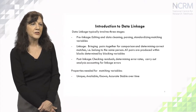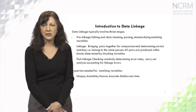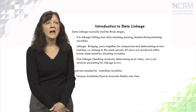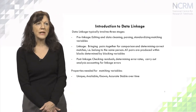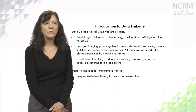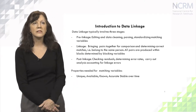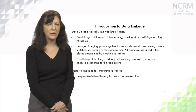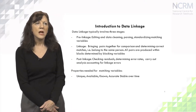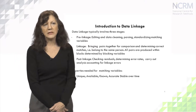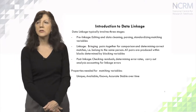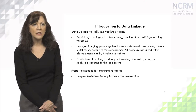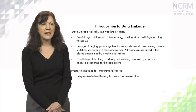The third stage is post-linkage, where we check for residuals or pairs that were not linked, determine the error rates, and take into account any linkage errors in the data set for analysis. When determining matching variables, they have to be unique, available and known, accurate, and stable over time.